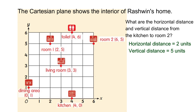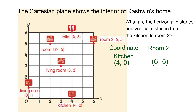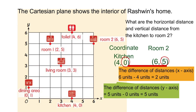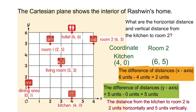You can also determine the distance by subtracting the coordinates. The coordinates of the kitchen are four, zero and the coordinates of the room are six, five. To find the horizontal distance, find the difference between the two x-coordinates: six minus four equals two units. To find the vertical distance, find the difference of the y-coordinates: five minus zero equals five units. So the distance from the kitchen to room two is two units horizontally and five units vertically.